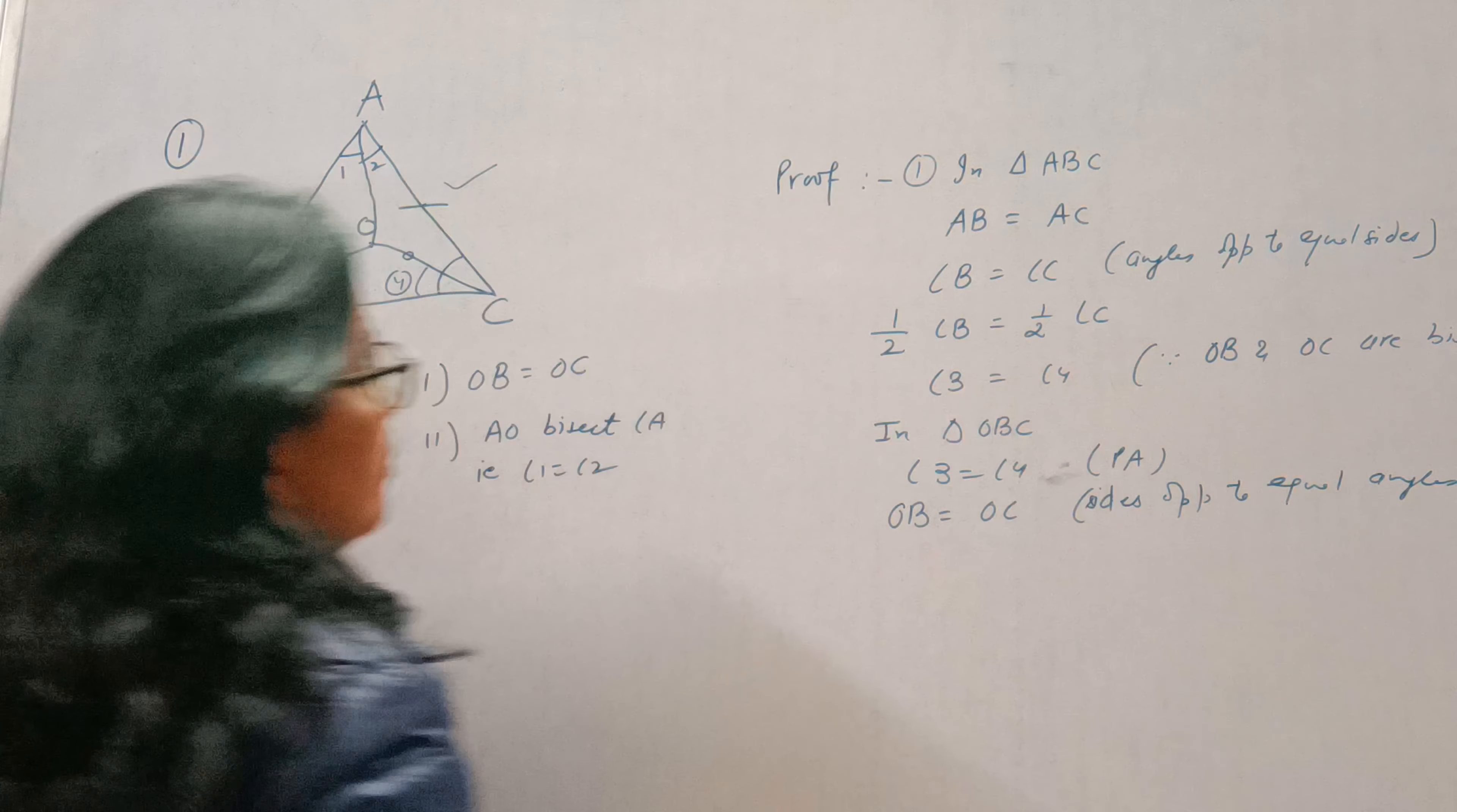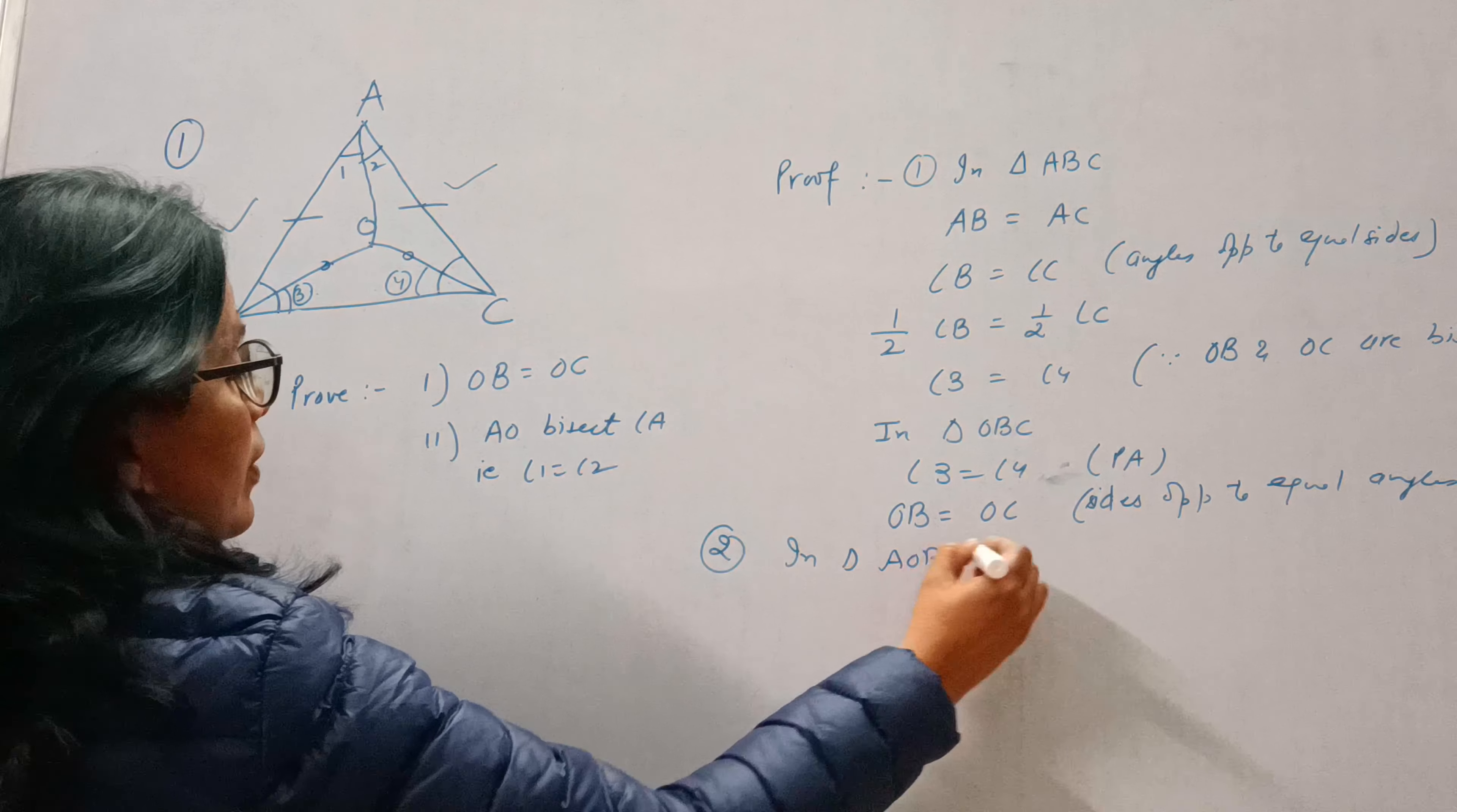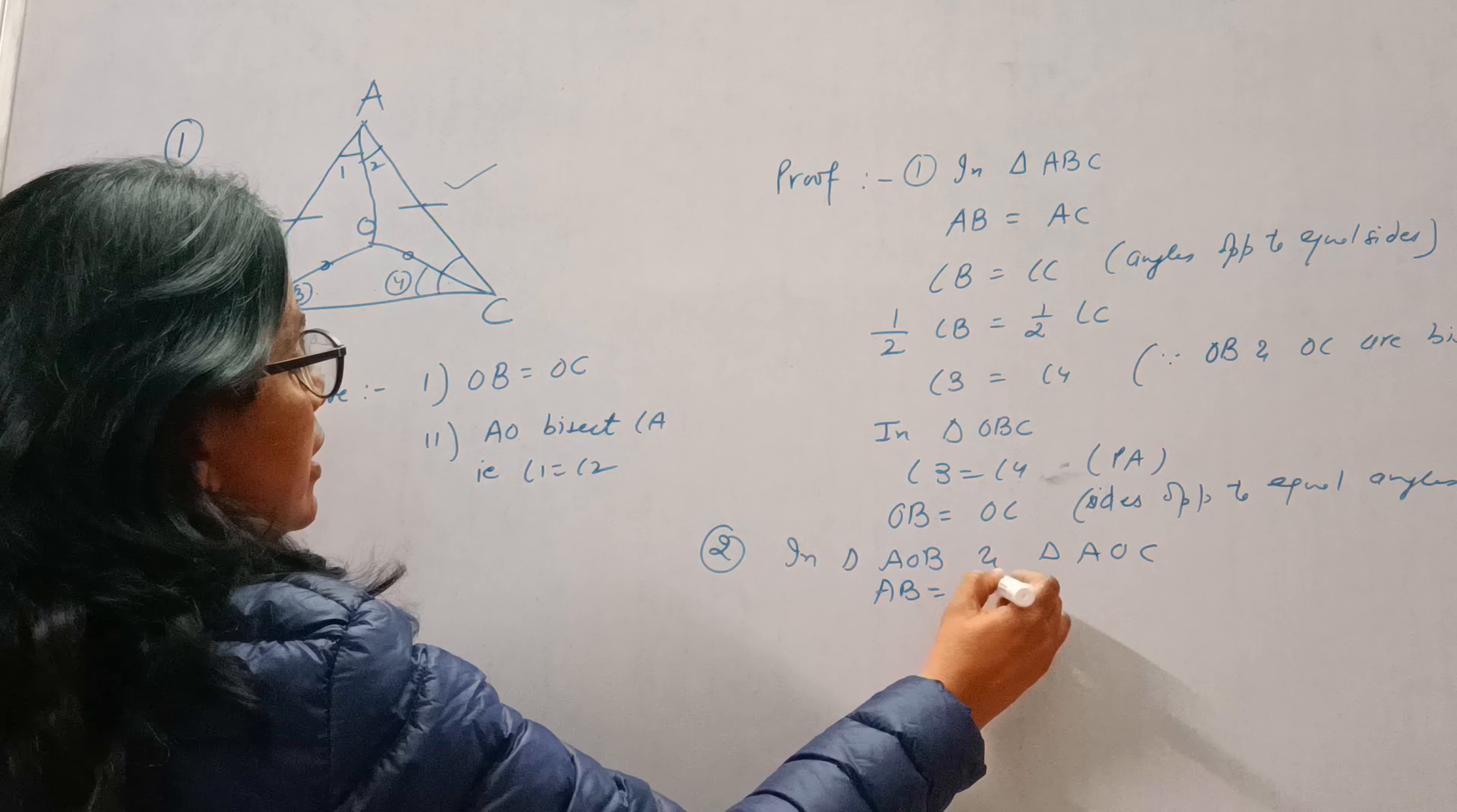Okay, now second part. In triangle AOB and triangle AOC, AB is equal to AC, that is given to us.